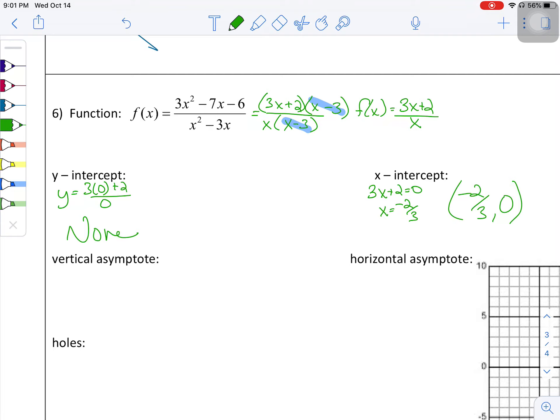Vertical asymptotes, set the denominator equal to zero. And well, it's written for us because there's nothing to solve there other than x equals zero.